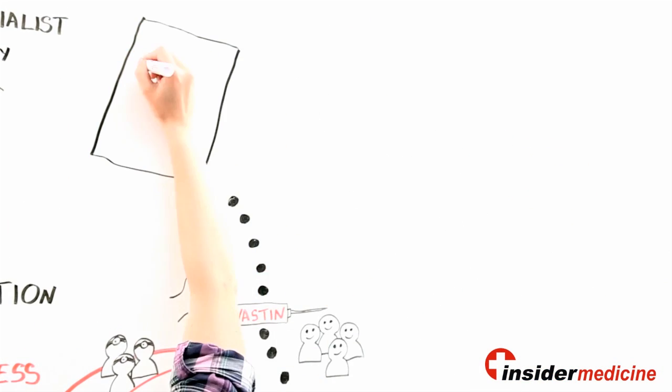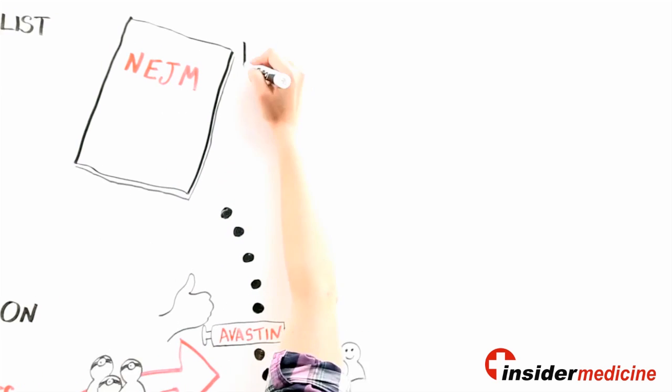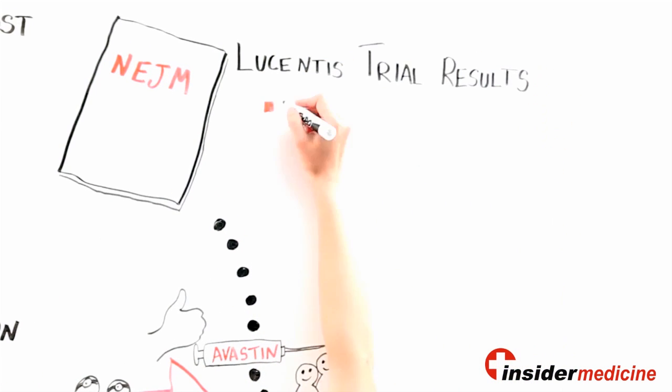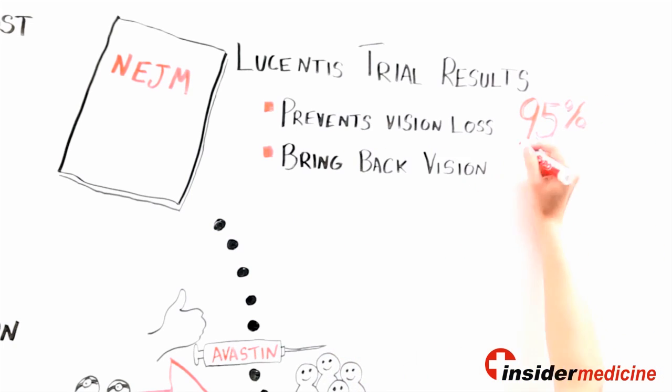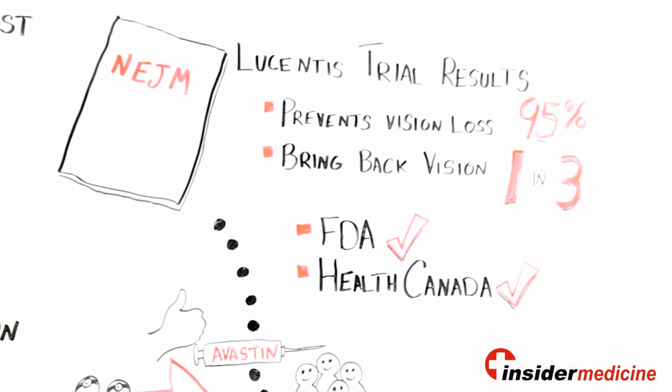In 2006, the Lucentis results were published in the New England Journal of Medicine. They showed that Lucentis was able to prevent visual loss in 95% of patients and actually bring back significant vision in one-third of patients, which was really incredible. So based on these results, most regulatory bodies like the FDA and Health Canada quickly approved Lucentis for wet macular degeneration.